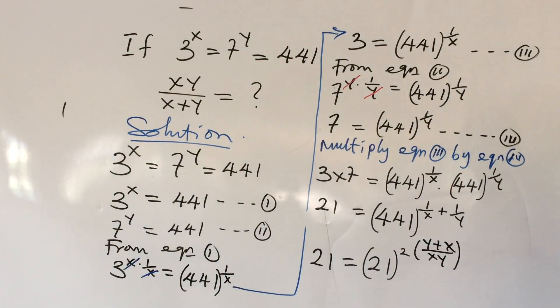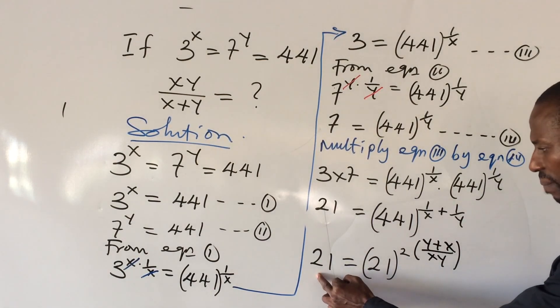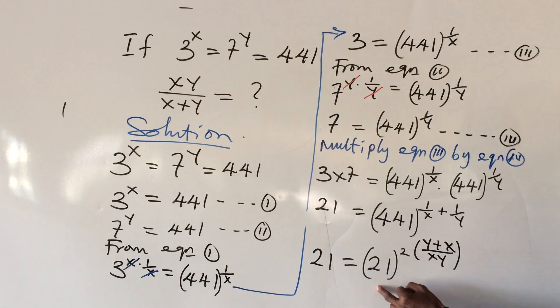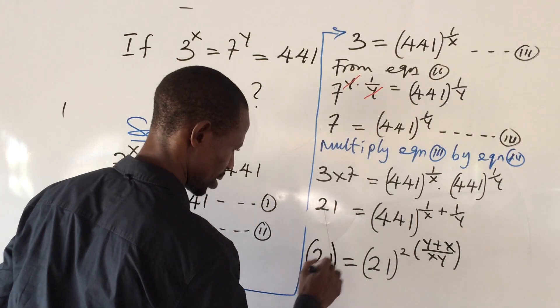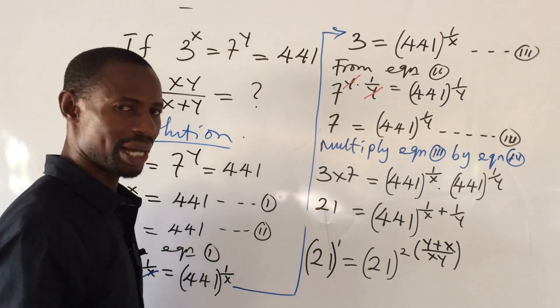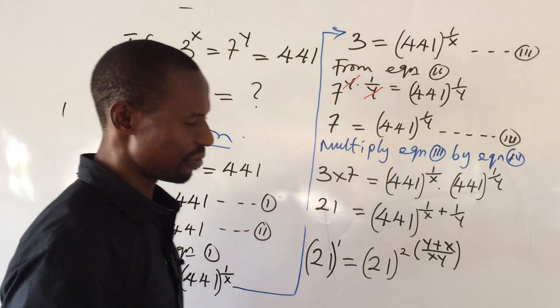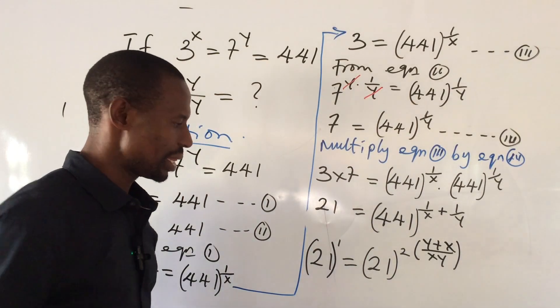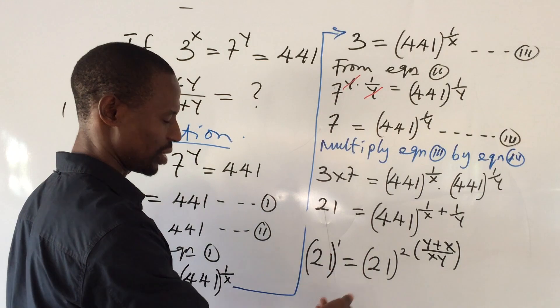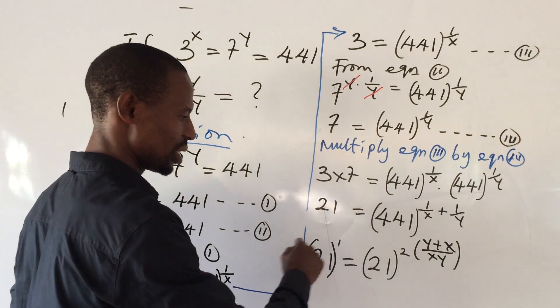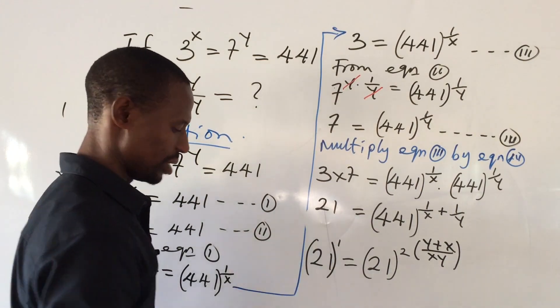Now take another look at this expression here now. We have the base here to be 21. We have the base on the right-hand side to be 21. This we can equally put as all to the power of 1. And there is another law of indices that says that when the bases are the same and you have an equality sign, what do you do? The bases will take care of themselves.